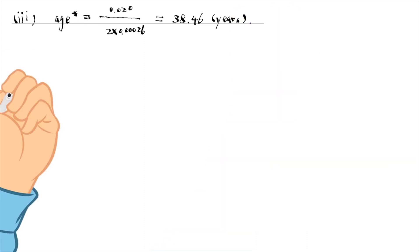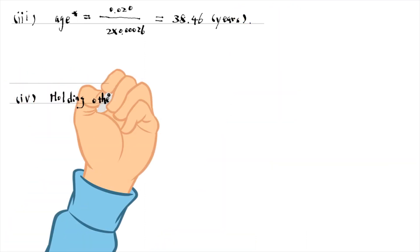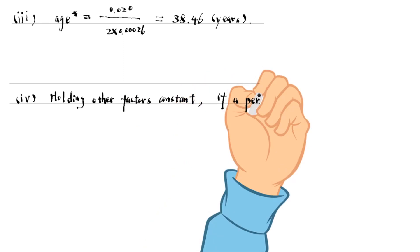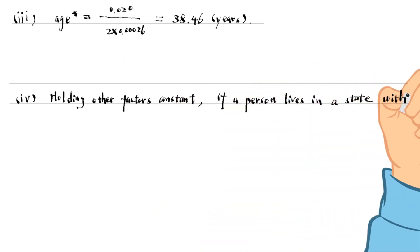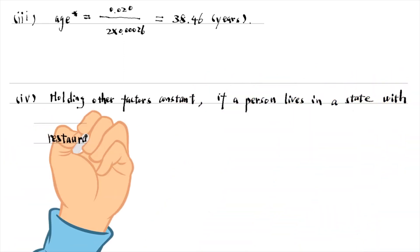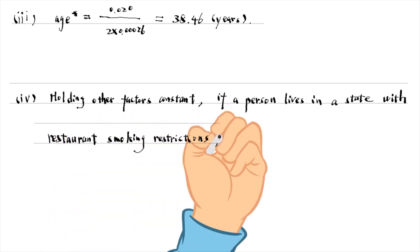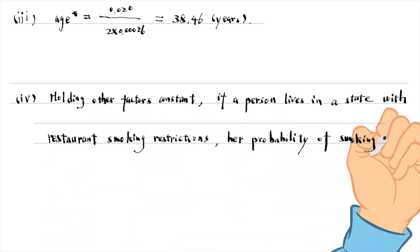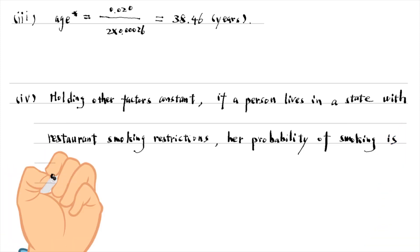Holding other factors constant, if a person lives in a state with restaurant smoking restrictions, her probability of smoking is 0.101 lower than the person who lives in a state without restaurant smoking restrictions.